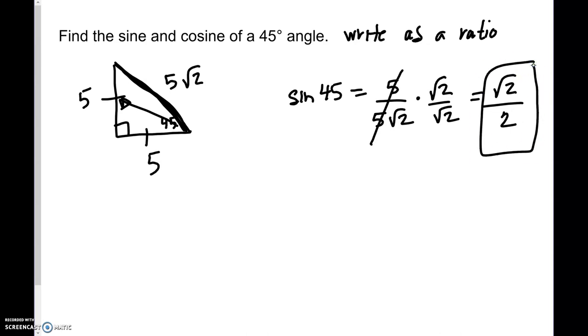If they want the decimal, just hit sine 45 on your calculator, and it gives you 0.707. Make sure you know whether they want the ratio or the decimal value.